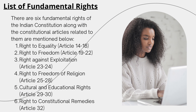The third important fundamental right is the right against exploitation. Under this right, there are two provisions you're supposed to know as a basic understanding. The first provision is abolition of trafficking in human beings — there should be no trafficking of human beings. The second provision is abolition of employment of children, which is a very important aspect to keep in mind.